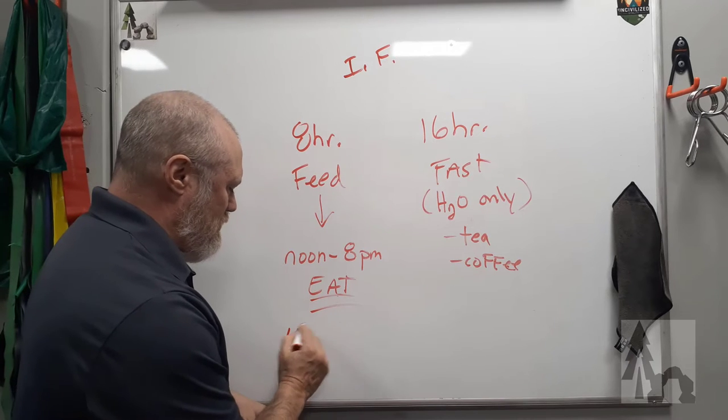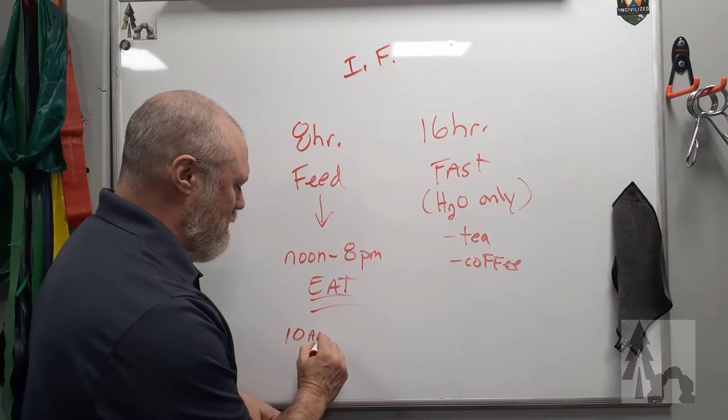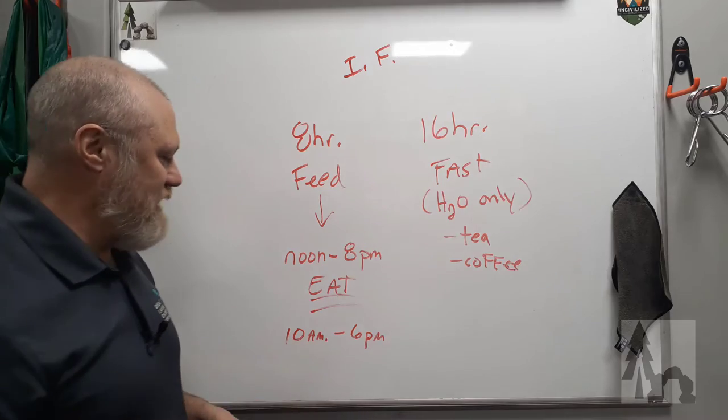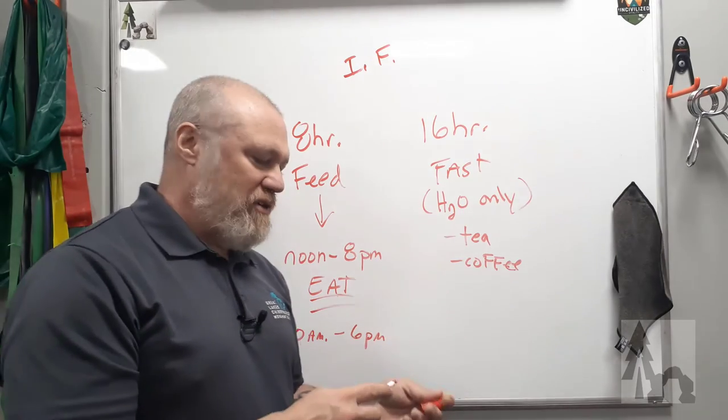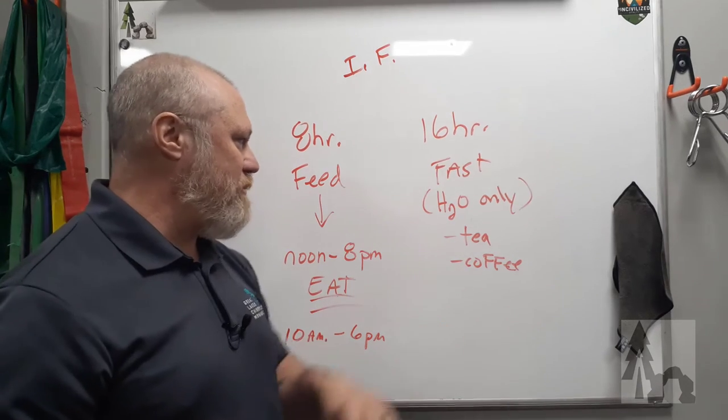You could do, depending if it fits your lifestyle better, 10 a.m. to 6 p.m. You could eat 6 a.m. to 2 p.m. You can pick any eight hours in the day that work for you as long as it's in a straight block.